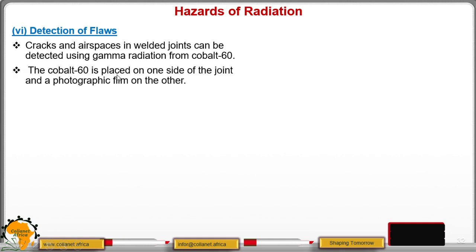The cobalt is placed on one side of the joint and a photographic film on the other side. If you see the traces of gamma radiation on the other side, or if you find that the photographic film is darkened, then automatically you will know that there is a crack or there is an airspace in that welded joint. That way we are able to detect the flaws of metal joints. When the film is developed, it will show any weakness in the joint.